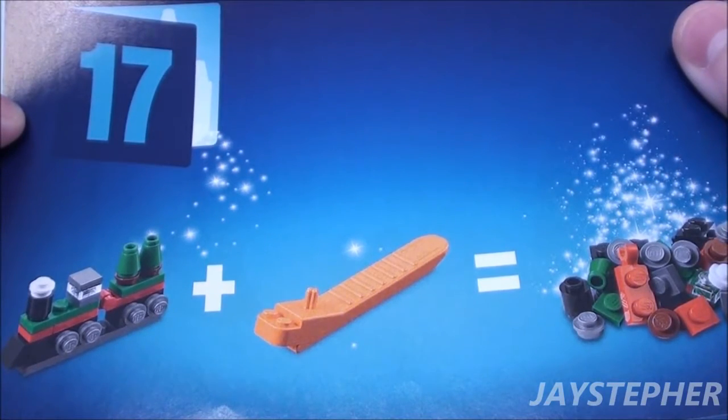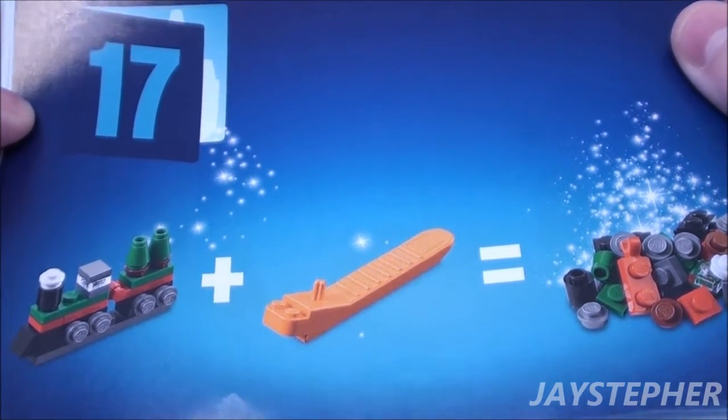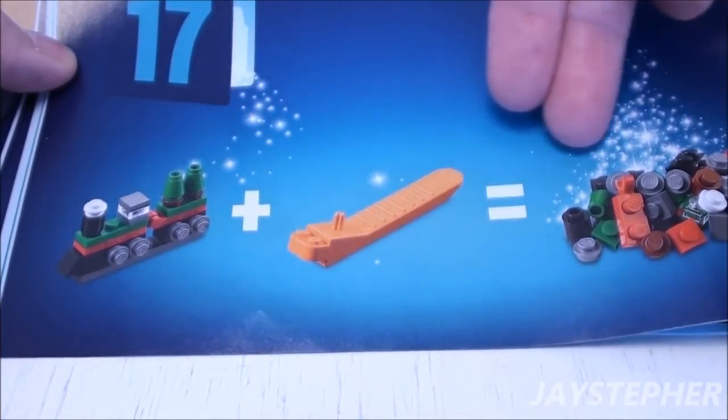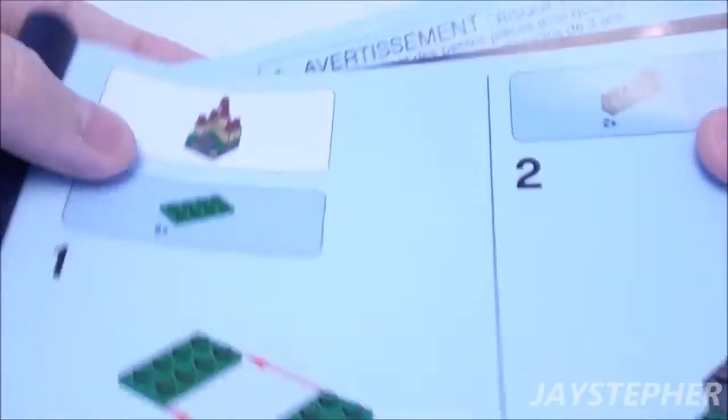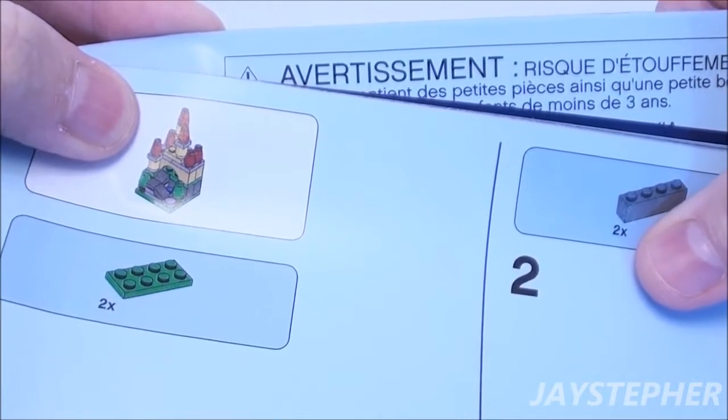Hey everyone! Jaystepher with the 17th build of Christmas Build-Up by Lego, set number 40222. Looks like we have to cause a train wreck and get the parts to build what appears to be a small castle.